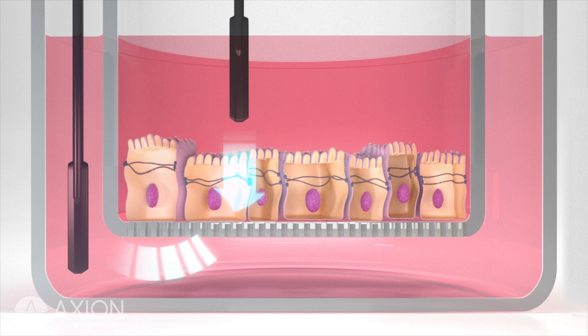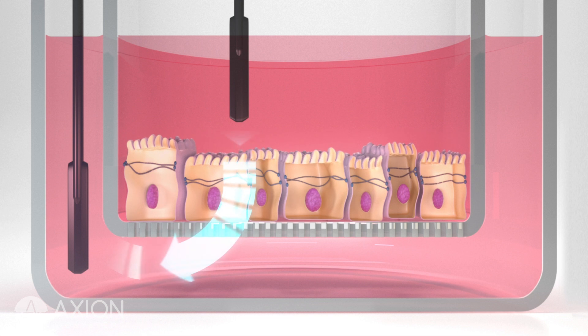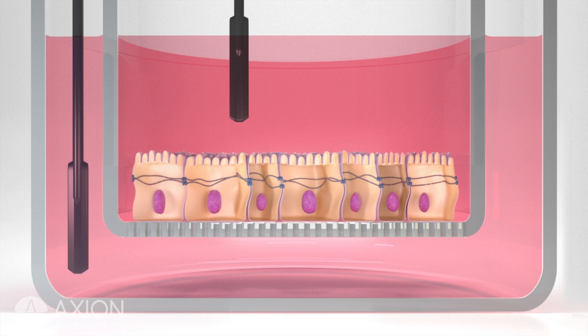This method is typically low throughput and variability can arise from electrode placement, changing environmental factors, and more. A fully confluent layer is required to accurately measure barrier function.